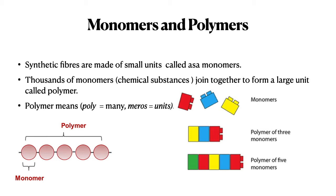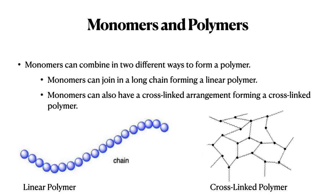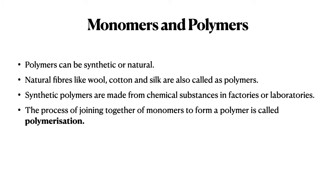Monomers can be joined in two ways: as a linear polymer or as a cross-linked polymer. When monomers are joined in a long straight chain without any branchings or cross-links, it is called a linear polymer. But if a polymer has branches and different links going in different paths, it is called a cross-linked polymer.